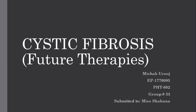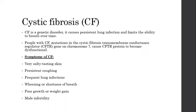First of all, we will see what is Cystic Fibrosis. Cystic Fibrosis is a genetic disorder. It causes persistent lung infection and limits the ability to breathe over time. People with CF have mutations in the CFTR gene — the Cystic Fibrosis Transmembrane Conductance Regulator — located on Chromosome 7.